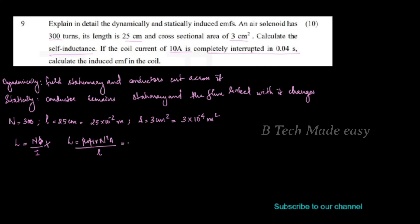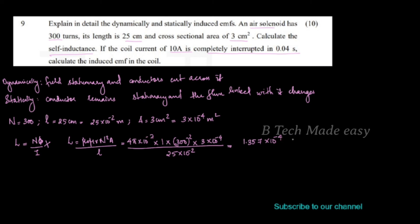Substituting values: mu0 equals 4π into 10 raised to minus 7, muR equals 1 for air, N squared equals 300 squared, area equals 3 into 10 raised to minus 4 meters square, divided by length 25 into 10 raised to minus 2. Solving gives the self-inductance value as 1.357 into 10 raised to minus 4 Henry.